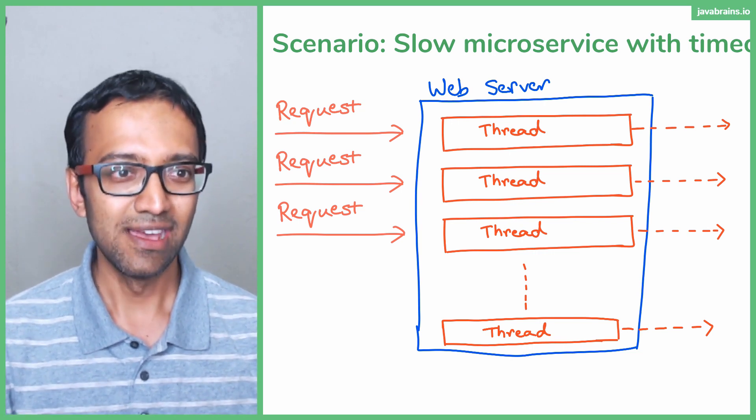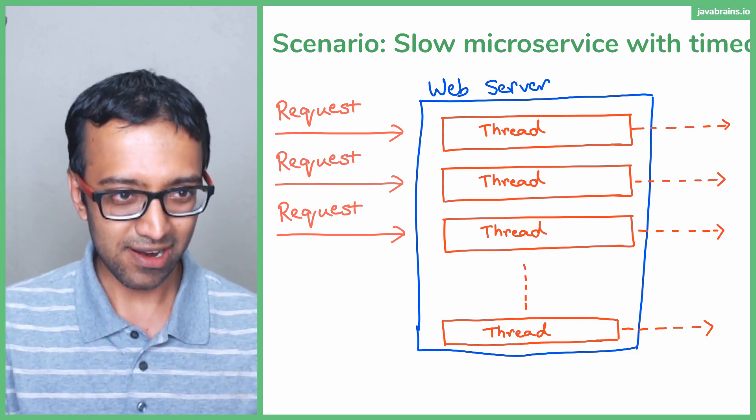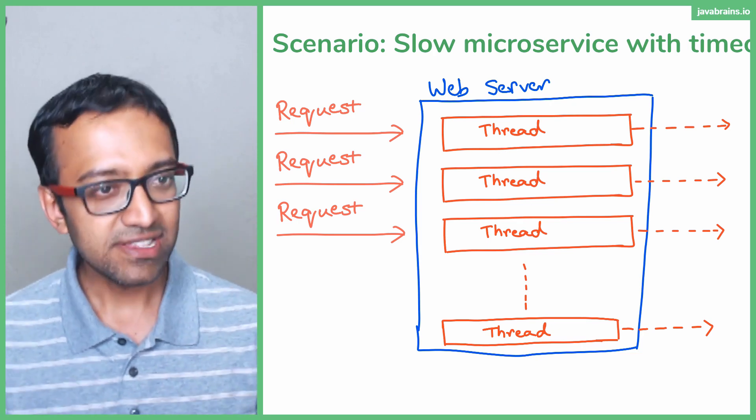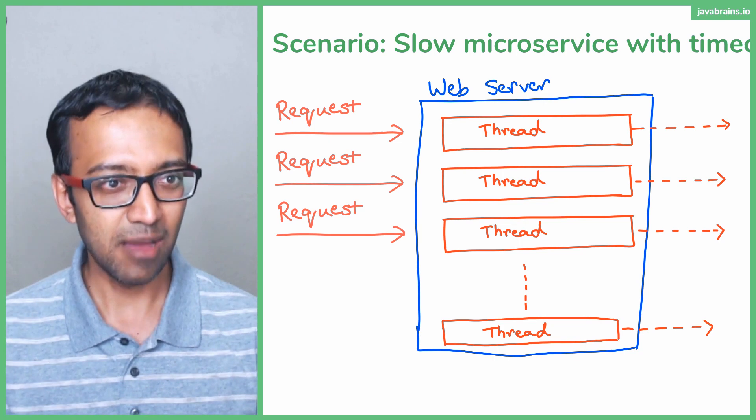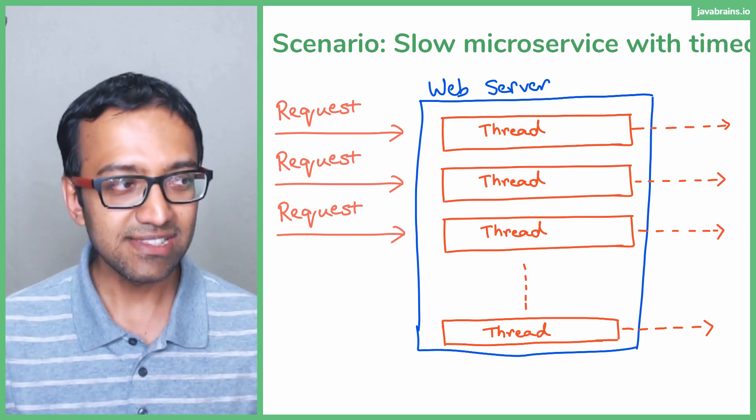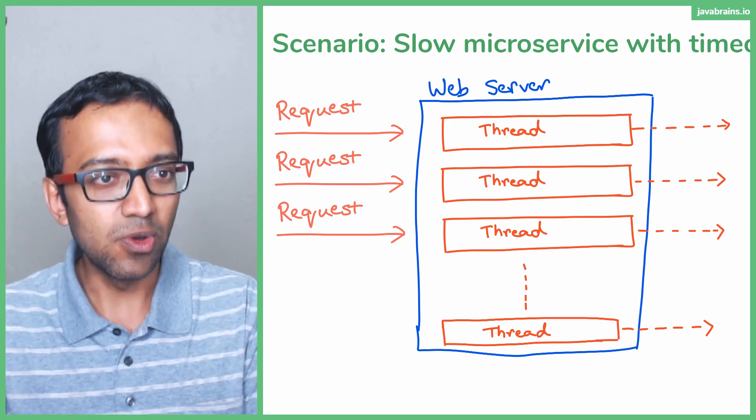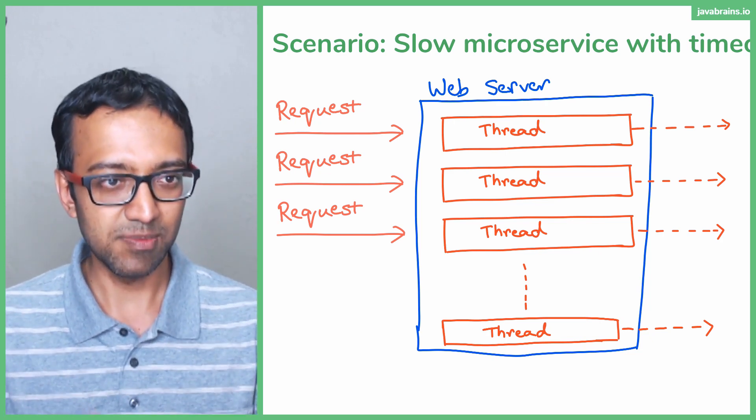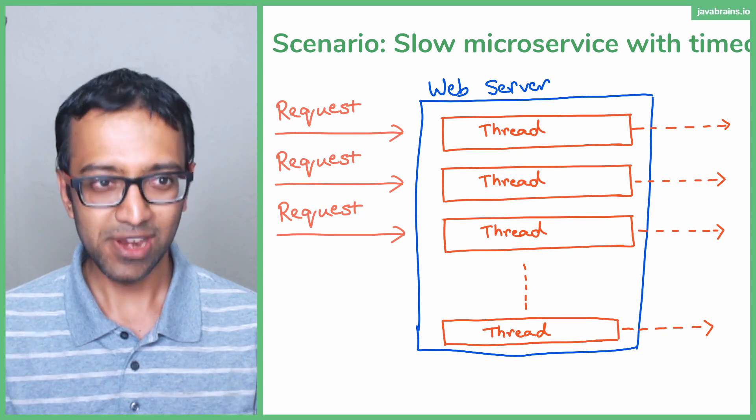We're back to the same issue, right? Even though the timeout is eventually going to clear the thread after the timeout period, the number of requests that are coming in, the frequency of requests that are coming in are too fast, or at least they're faster than what the timeout can do to remove stale requests from the resources, from the thread resource. You see what I'm saying?